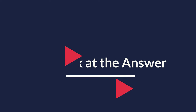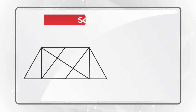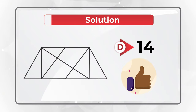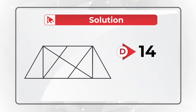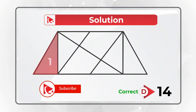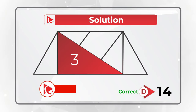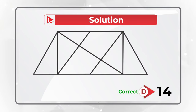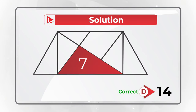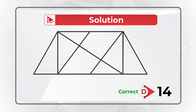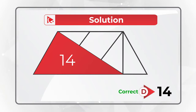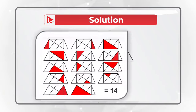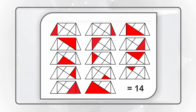The correct choice is D: 14 triangles. Let me show them all: 1, 2, 3, 4, 5, 6, 7, 8, 9, 10, 11, 12, 13, and 14. Isn't it amazing how many triangles can fit into a simple shape?